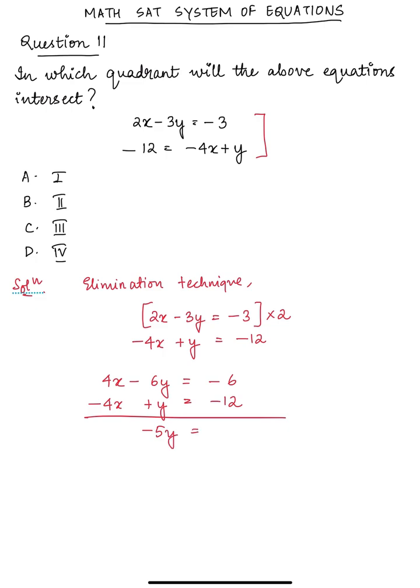So minus 5y is equal to minus 18, and y is minus 18 by minus 5, that is plus 18 by 5. This is very important.